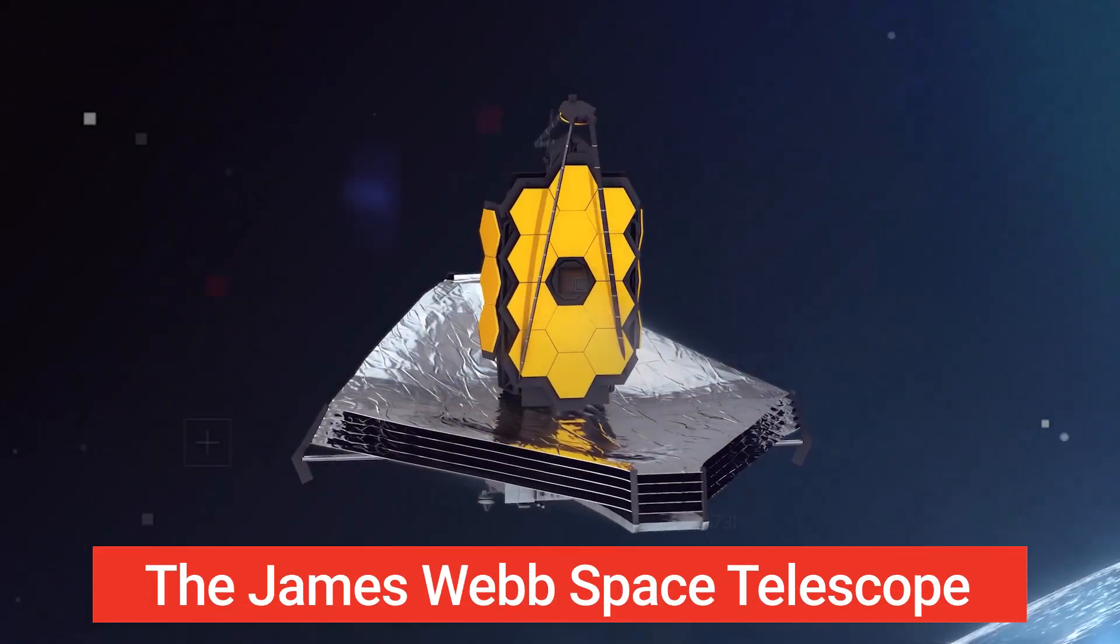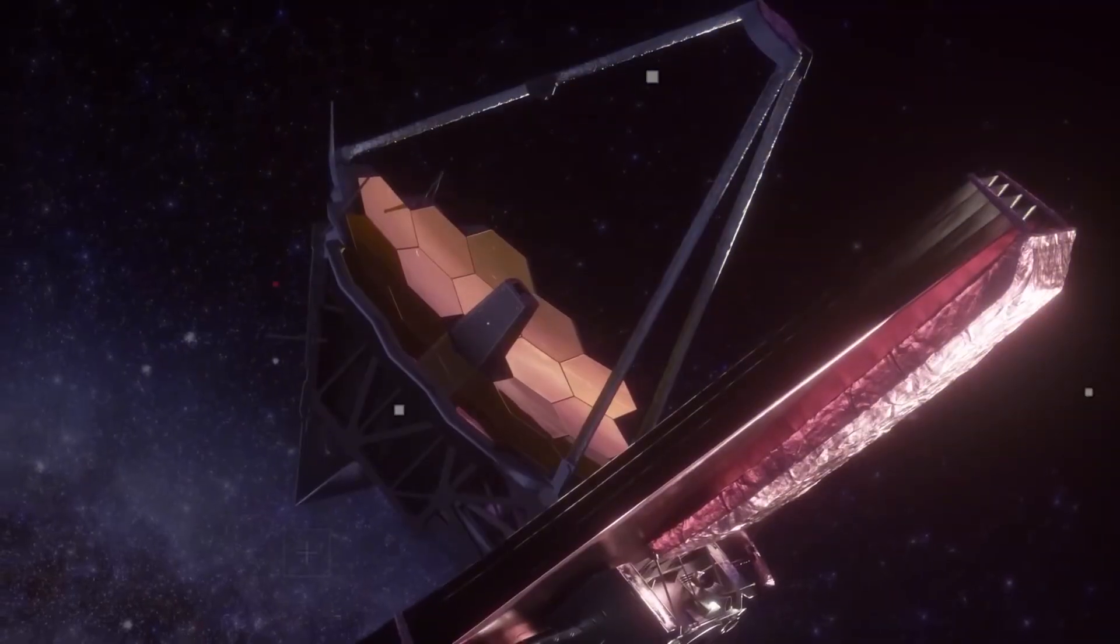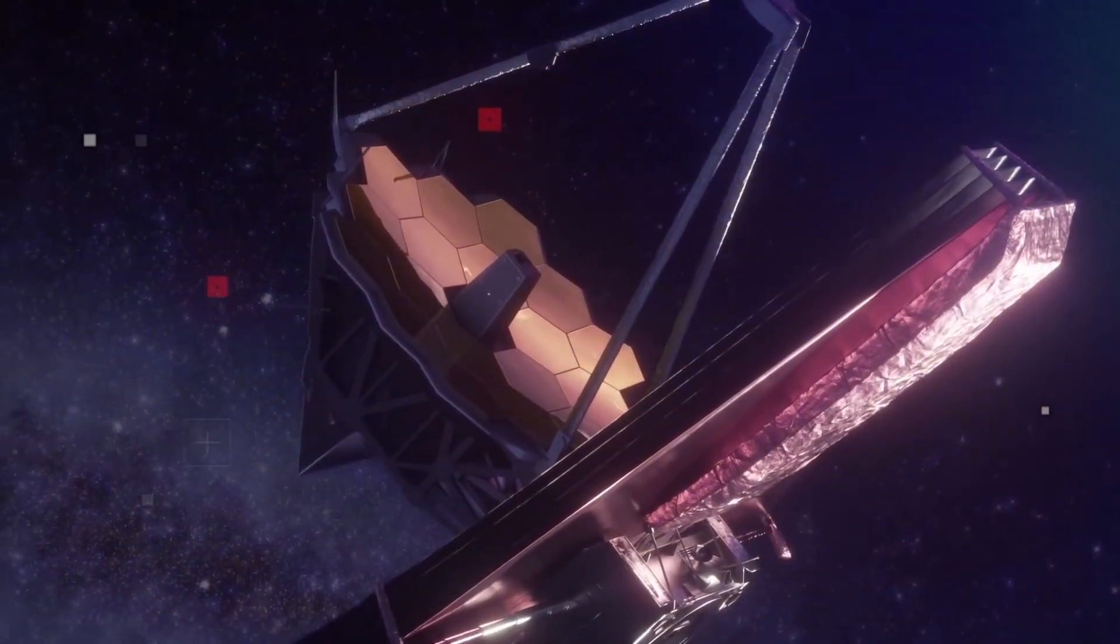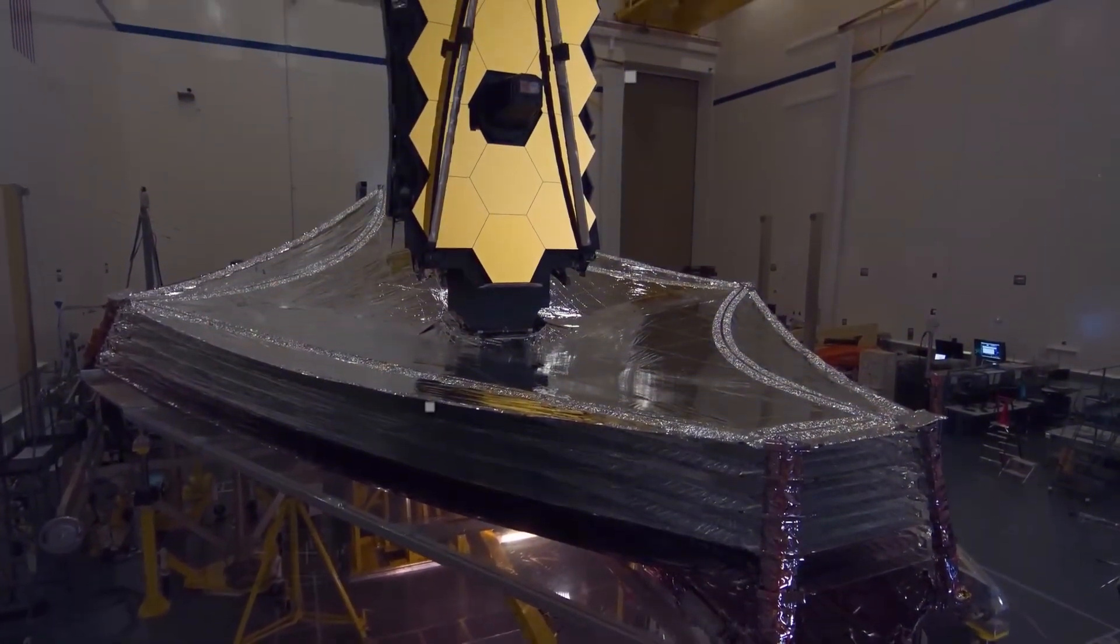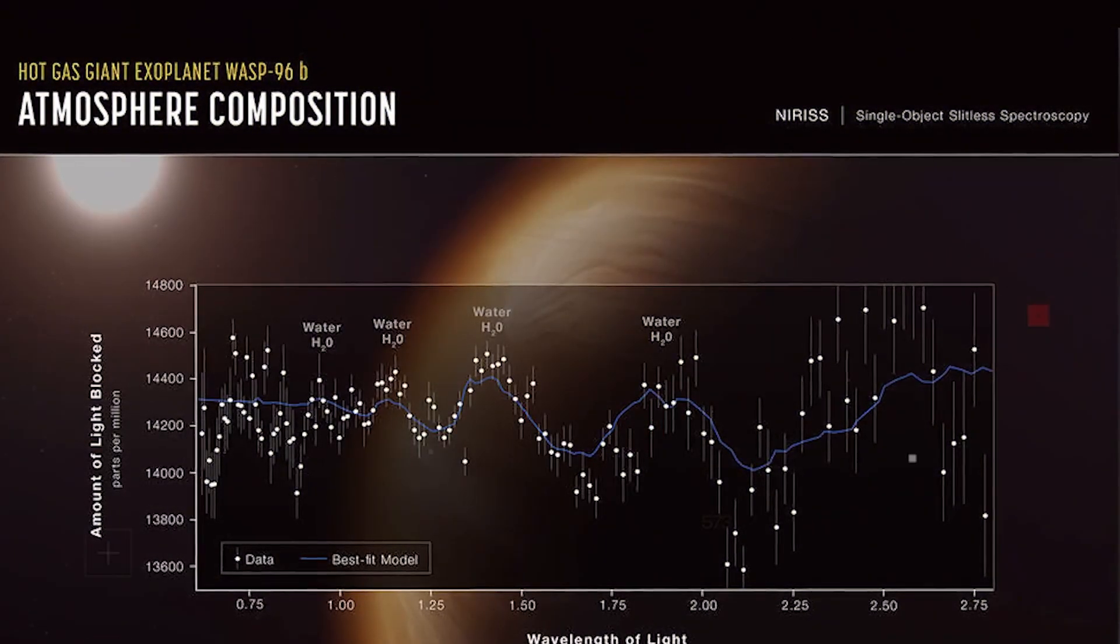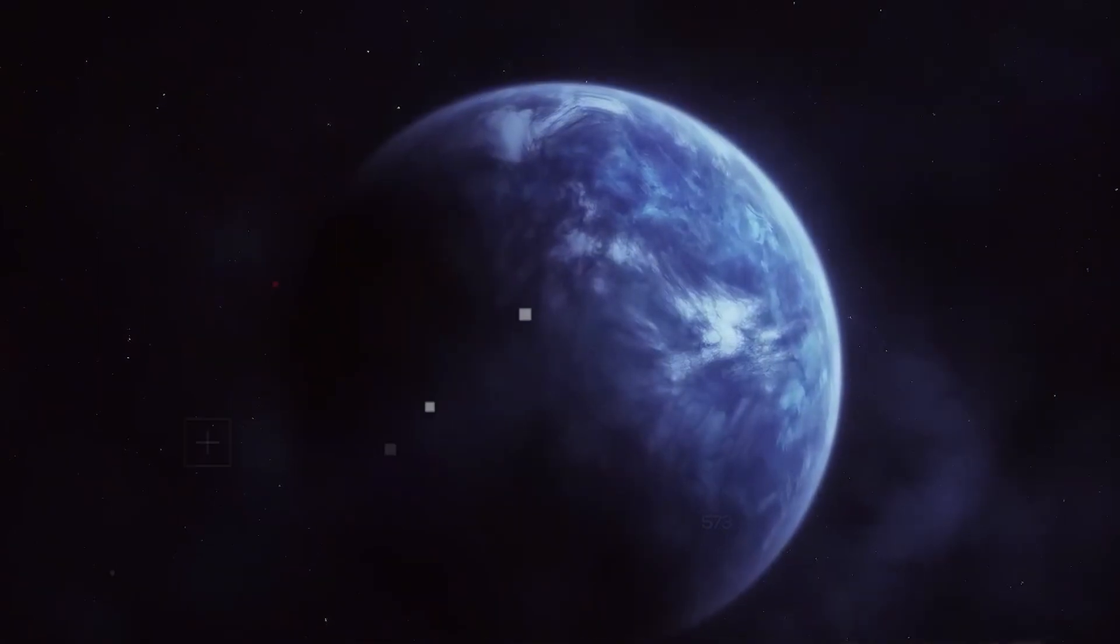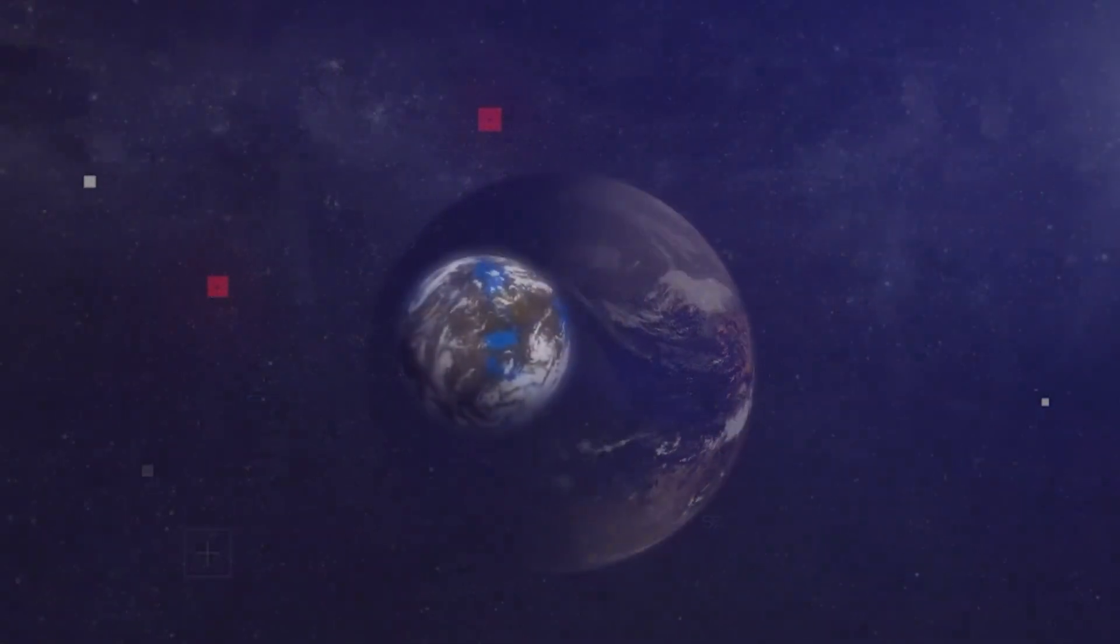The James Webb Telescope's ability to capture such detailed images hinges on its advanced technology, including its large primary mirror and sensitive infrared detectors. These instruments enable astronomers to analyze the faint signals emitted by Proxima b, distinguishing them from the overwhelming brightness of Proxima Centauri.